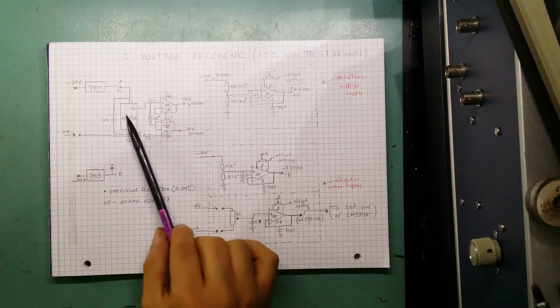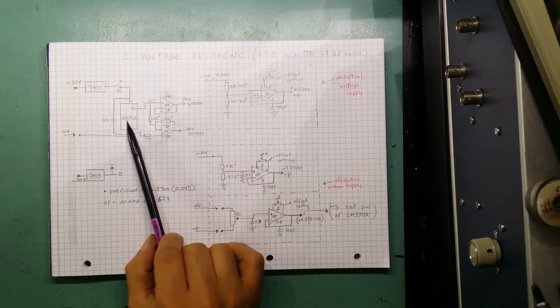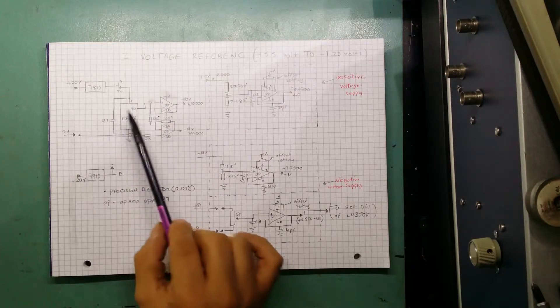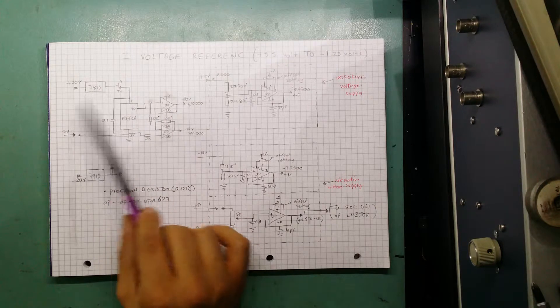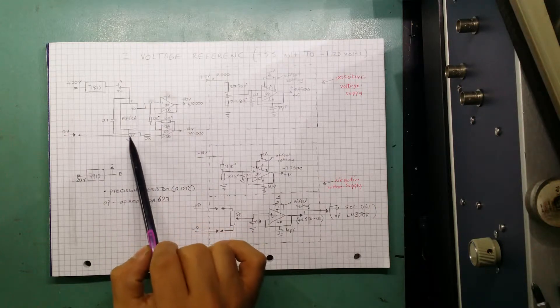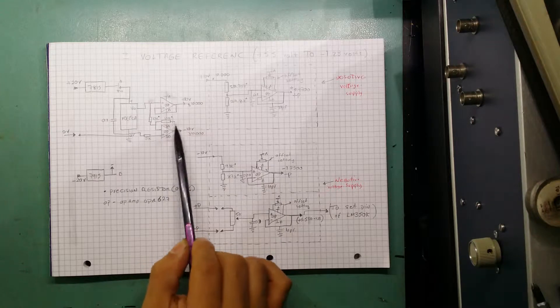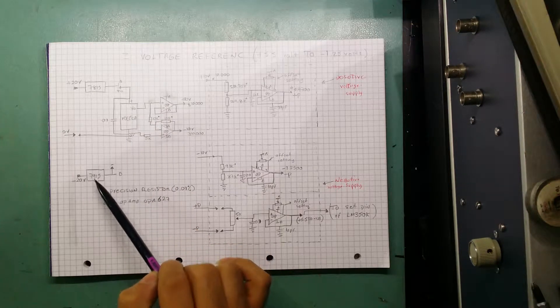My voltage reference is based on Analog Devices REF01 10V precision voltage reference. Now this precision voltage reference requires anything above 13V to I believe 40V and a ground. Because I'm going to get a negative voltage reference from this, I also need a negative voltage supply as well.